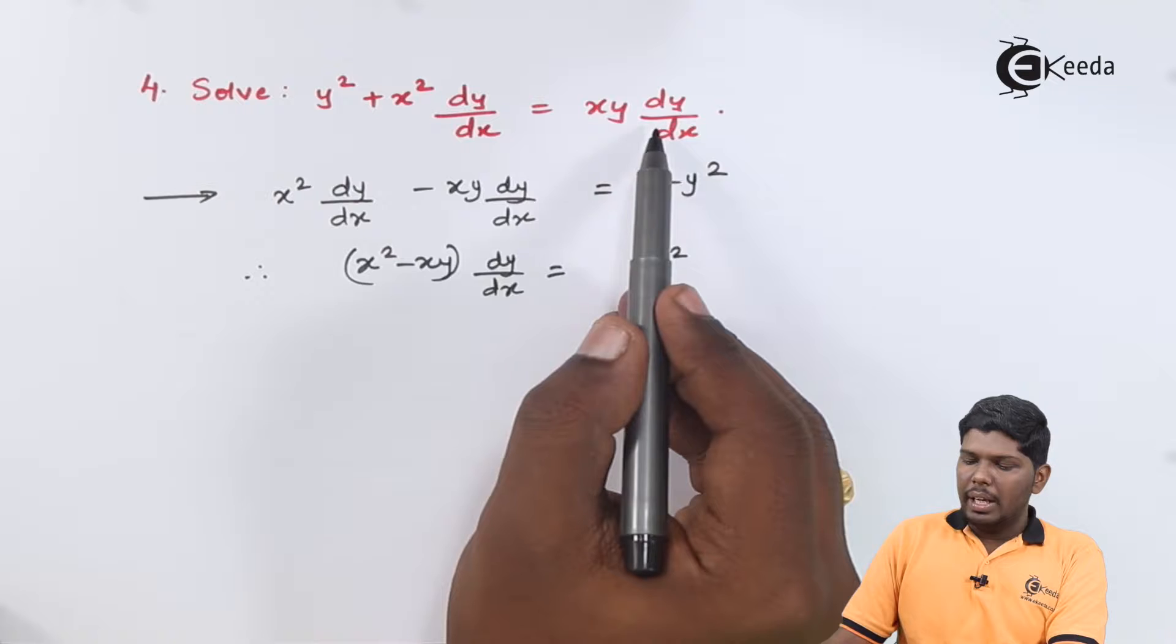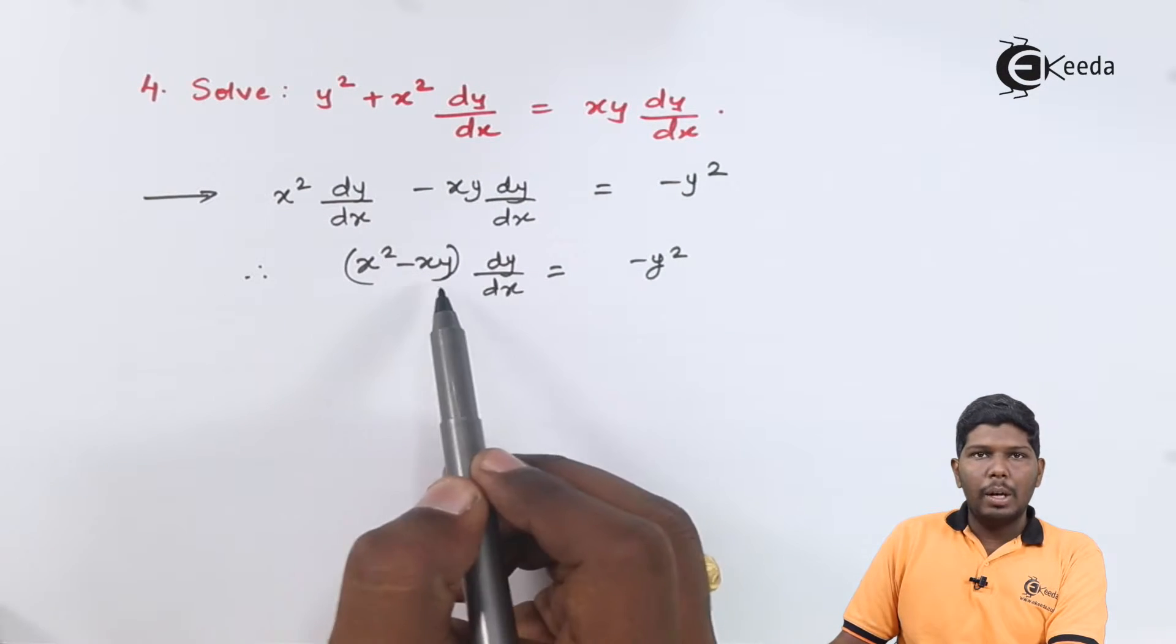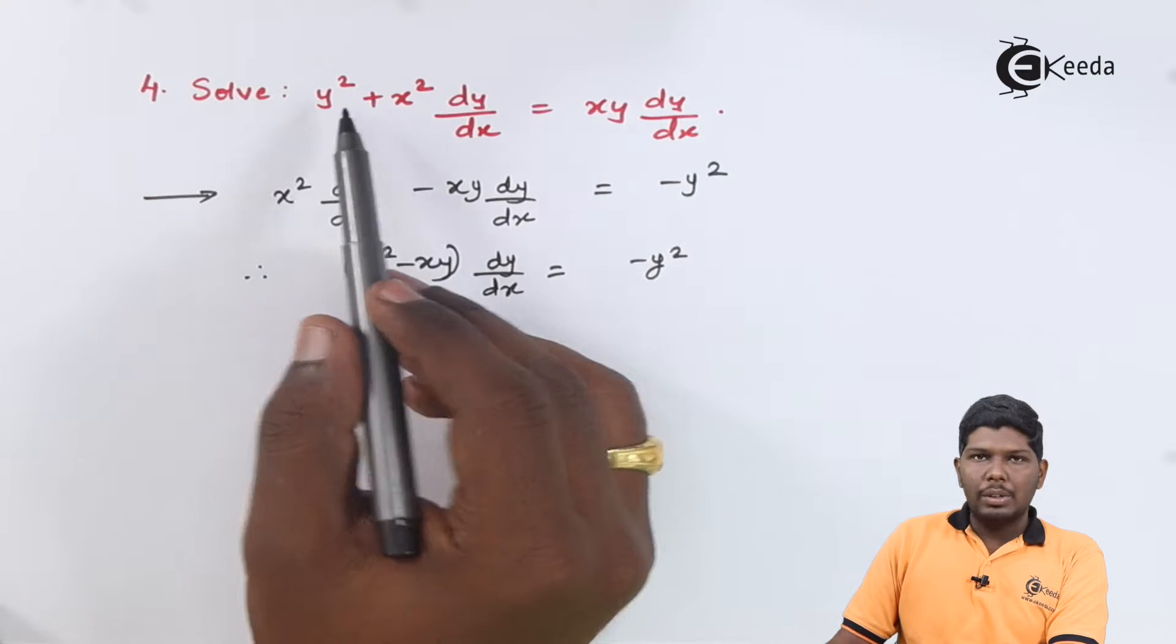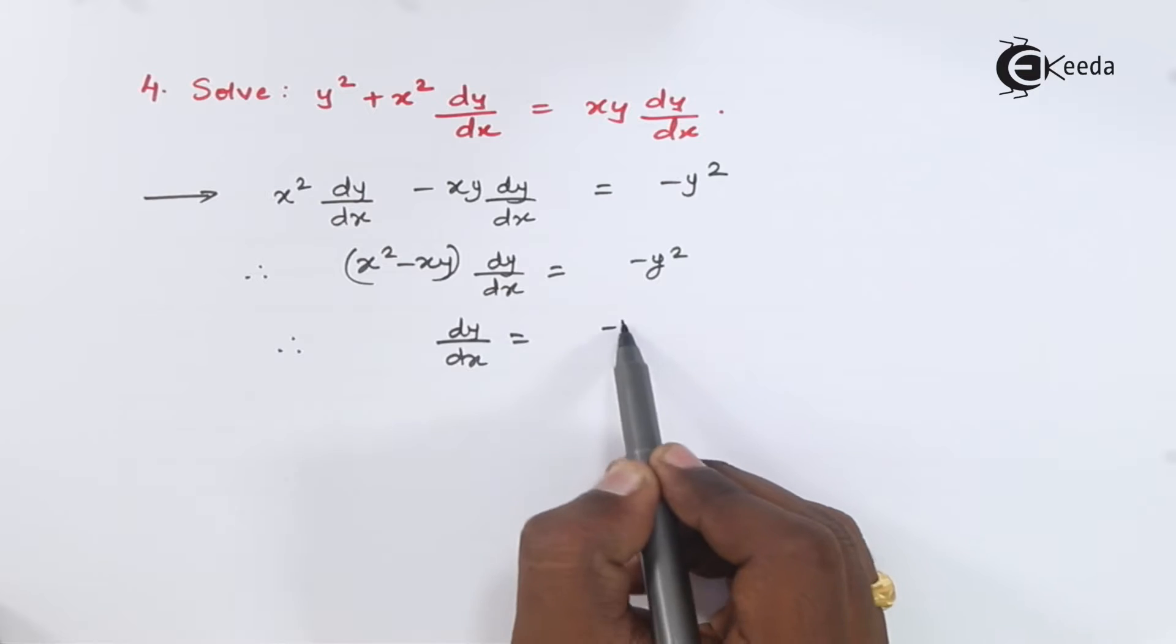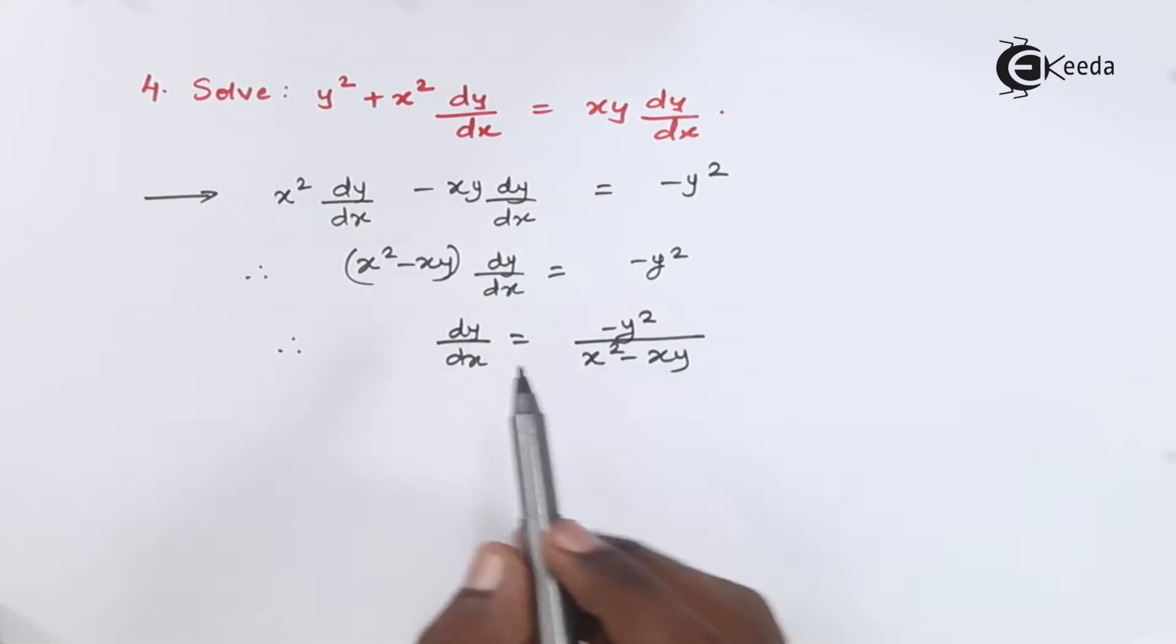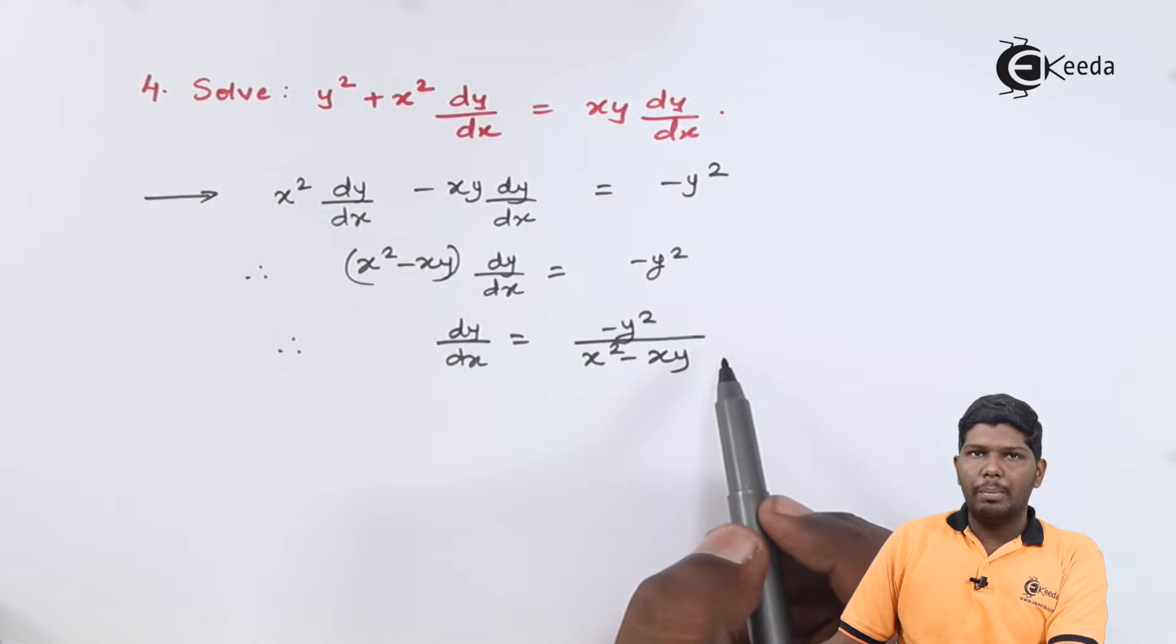As you can see, we have taken this term on the left hand side and after taking dy by dx as common we have x squared minus xy left, and plus y squared will become minus y squared. dy by dx equals minus y squared upon x squared minus xy.